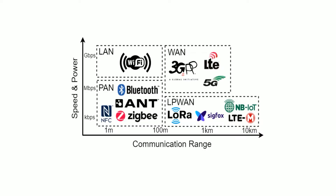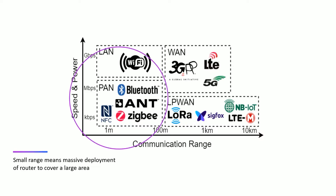So in this picture, we could categorize these networks into four parts. However, for technologies like Bluetooth or Zigbee, it only covers a small range, so it means we need to deploy a lot of routers to make a full coverage of a certain area.